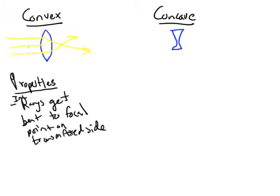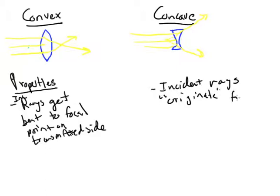On the concave lens we have the same incoming horizontal incident rays. What's going to happen is these are going to diverge, and then if you were to trace back they would have looked to have originated from this focal point on this side. So incident rays originate, in quotations because they don't actually but it looks like they do, from focal point on incident side.